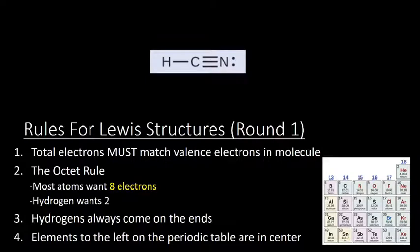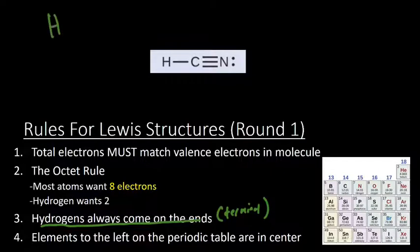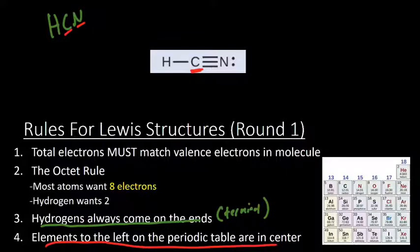The third and fourth rule I'm going to list together because they're pretty quick. One is that hydrogen always comes on the end. We call that terminal. And that's actually because they can only have one bond because they only want two electrons, so they're always going to be at the end. Now, one key question you'll have when you're drawing a Lewis structure is what should I put at the center, right? So I see HCN. Well, I could put carbon at the center or nitrogen at the center. The correct structure has carbon at the center. Why is that?